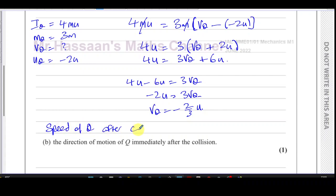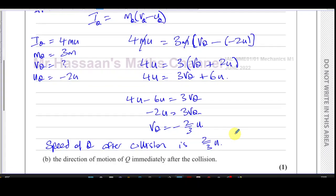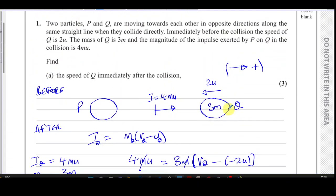We don't give it a sign because we're looking for the magnitude. We don't even give it a sign when we talk about the velocity—we talk about its magnitude and its direction, which they've asked us about in part (b): the direction of motion of Q immediately after the collision. Now what we don't do, which many students do, is say 'Q is moving to the left.'